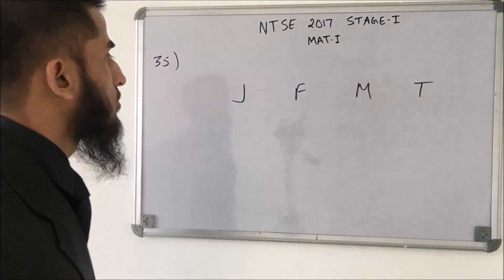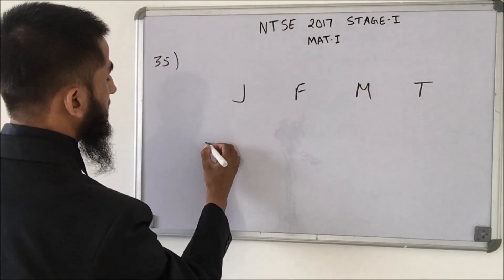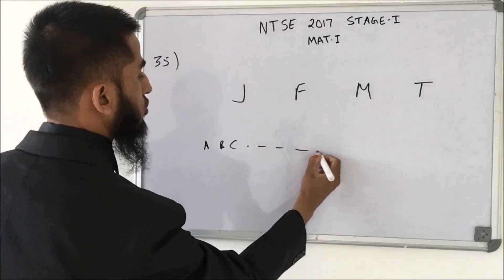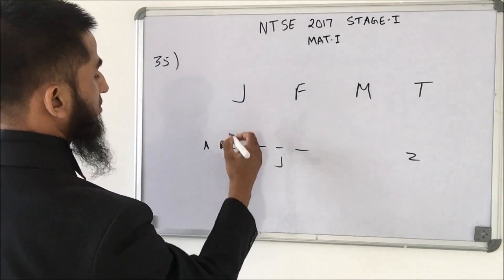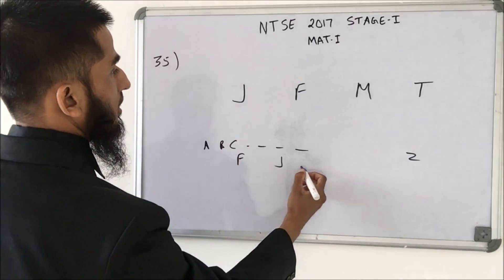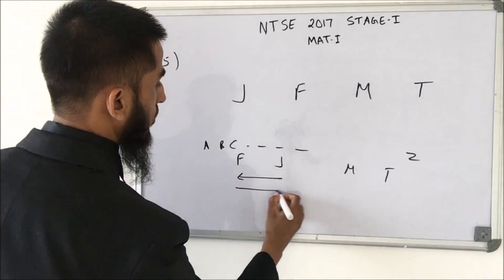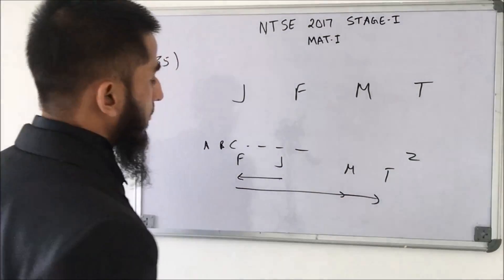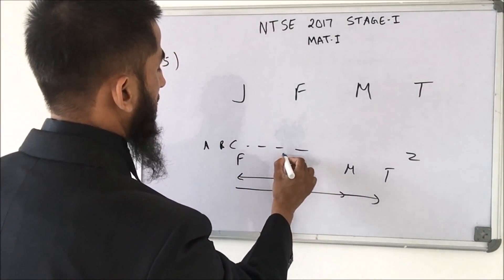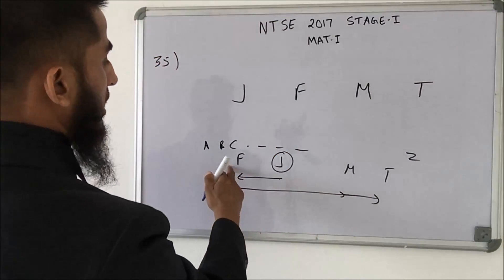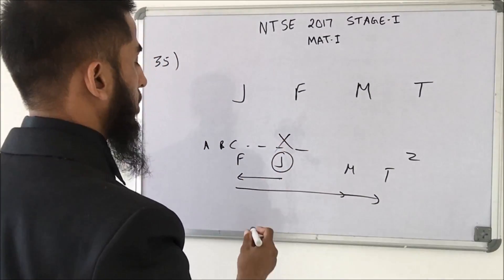Here we need to find the odd one out. The letters are J, F, M, T. From F to M to T we go in one direction (increasing by 6 or 7), but from J to F we go in the opposite direction. So J is the odd one out because the pattern F, M, T follows one consistent direction.